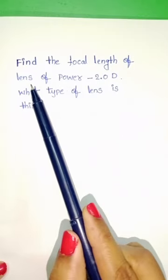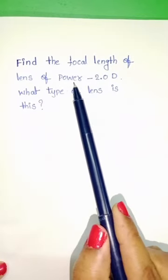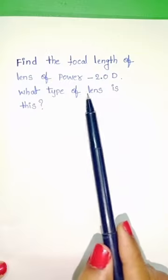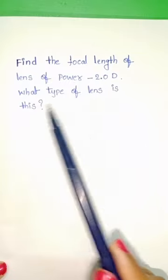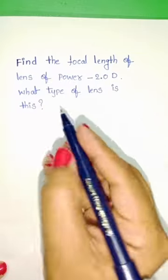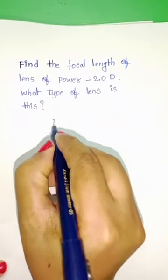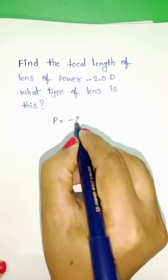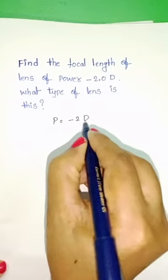Find the focal length of the lens of power minus 2 diopters. What type of lens is this? Given: power equals minus 2 diopters.